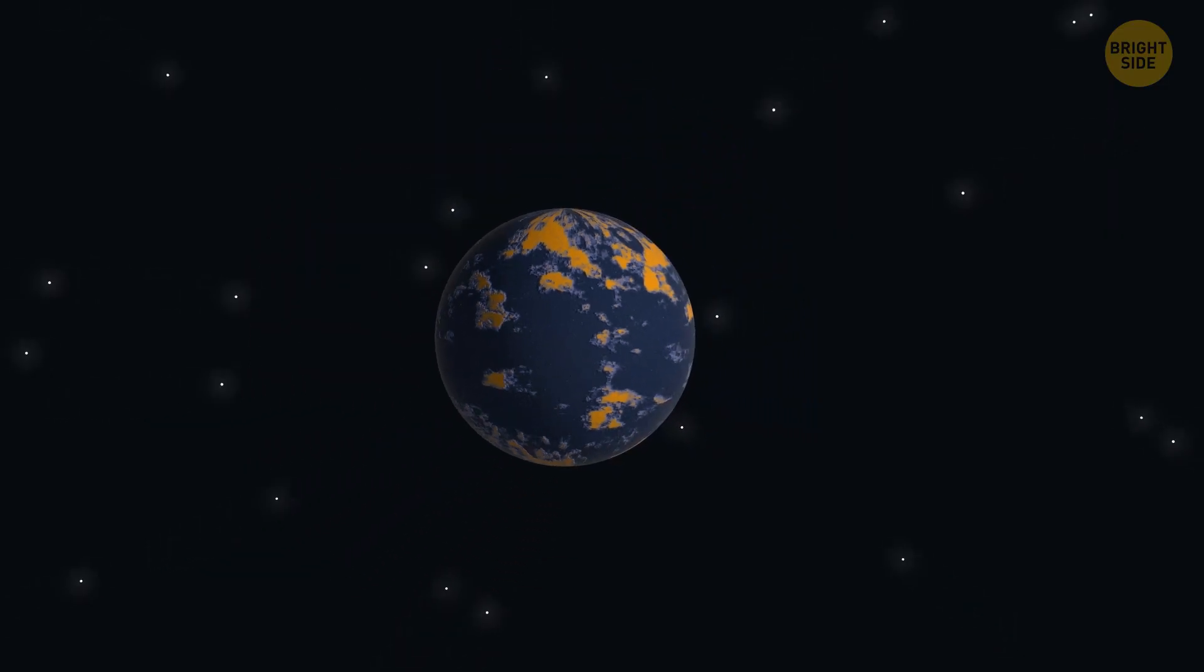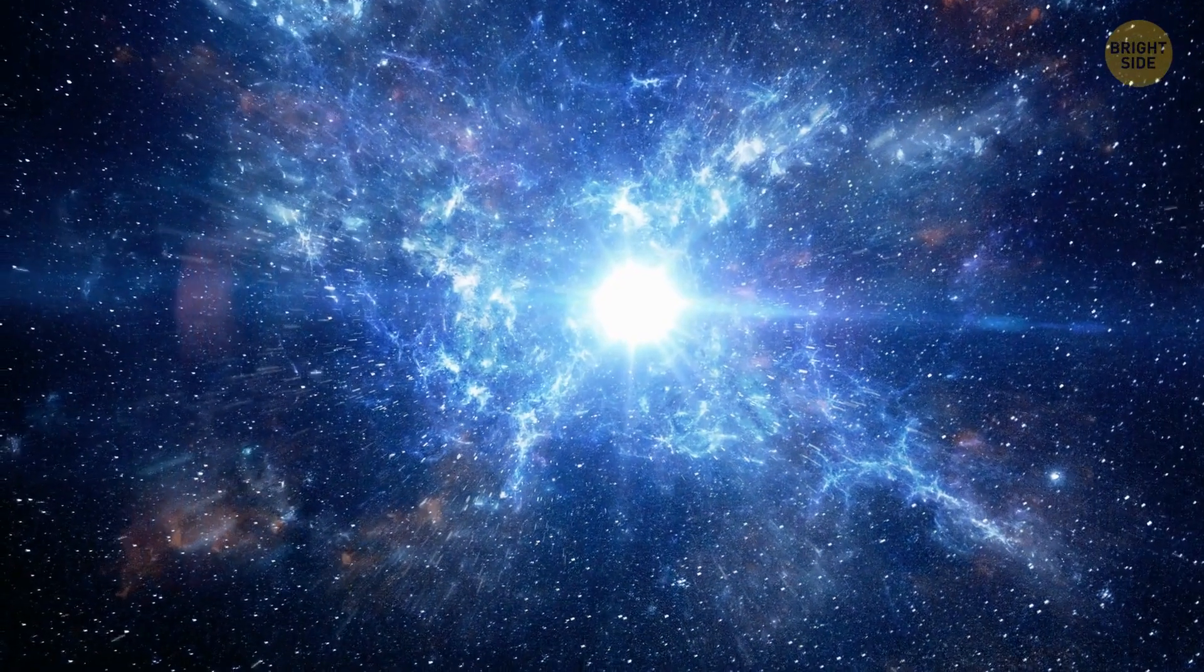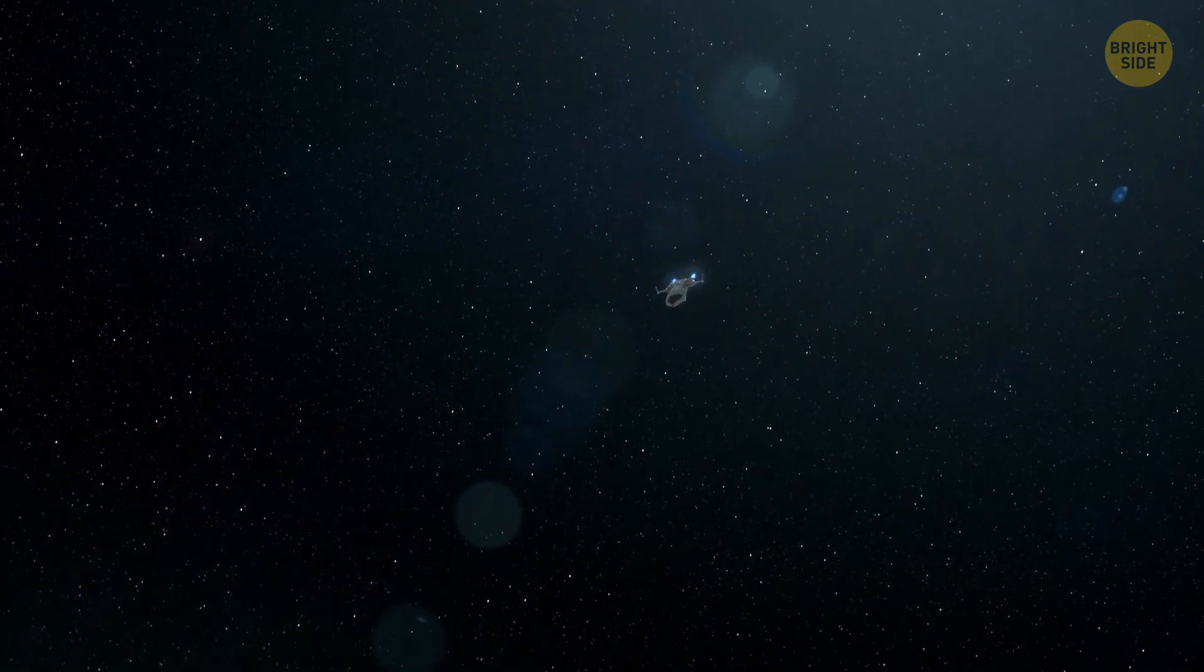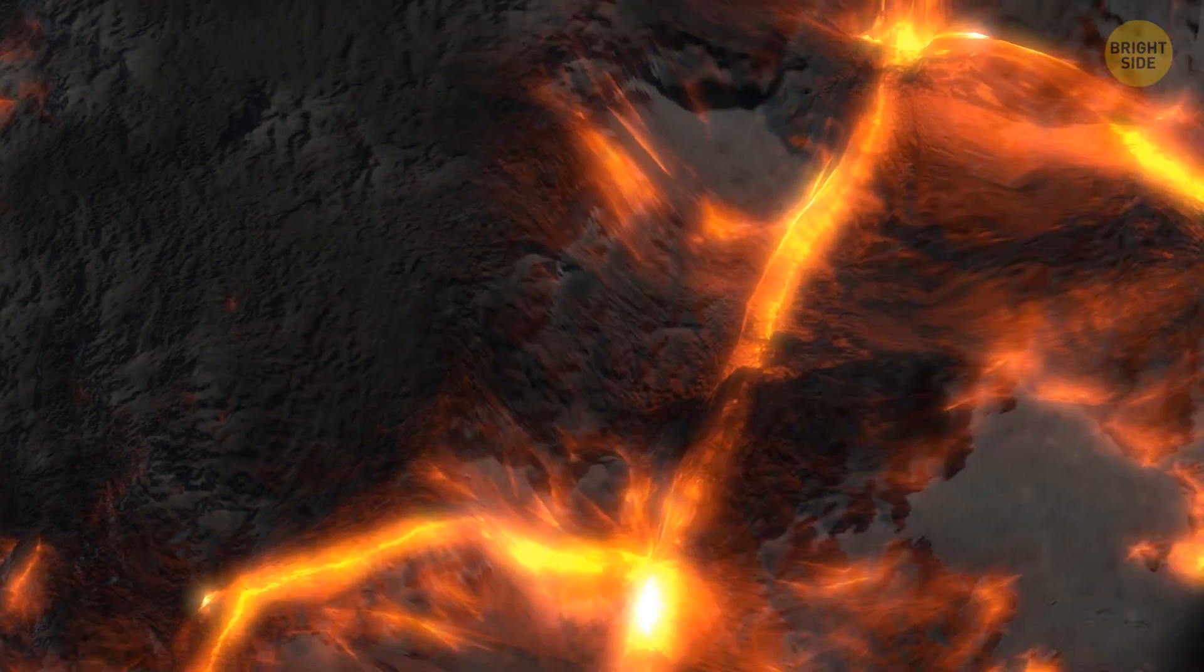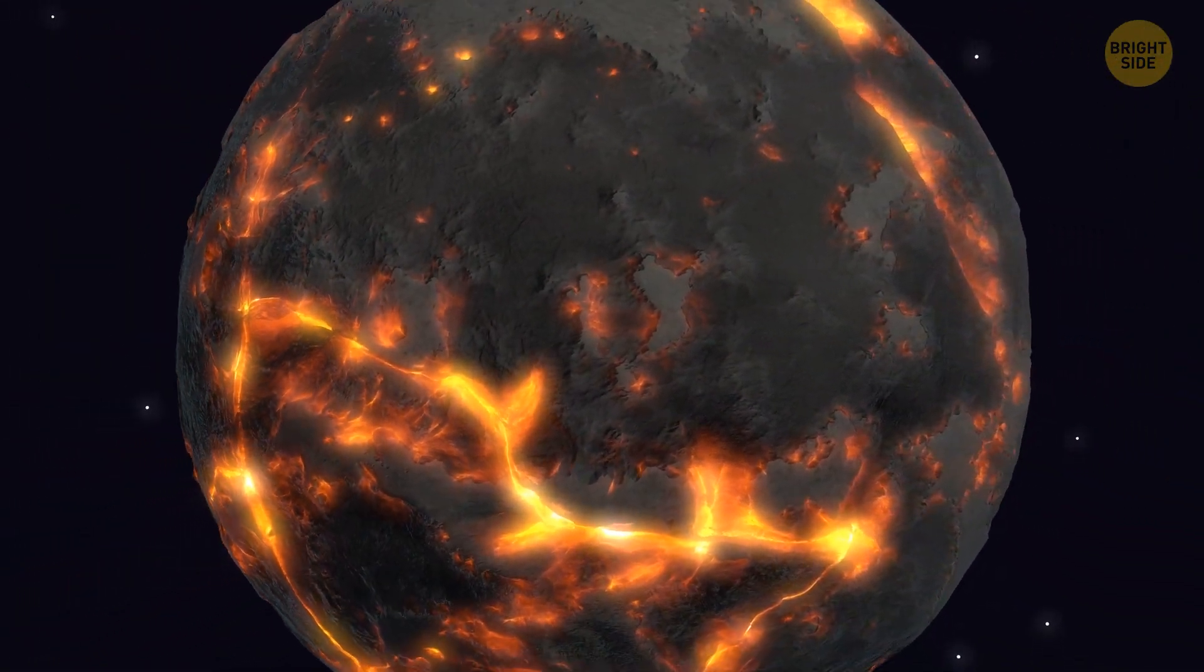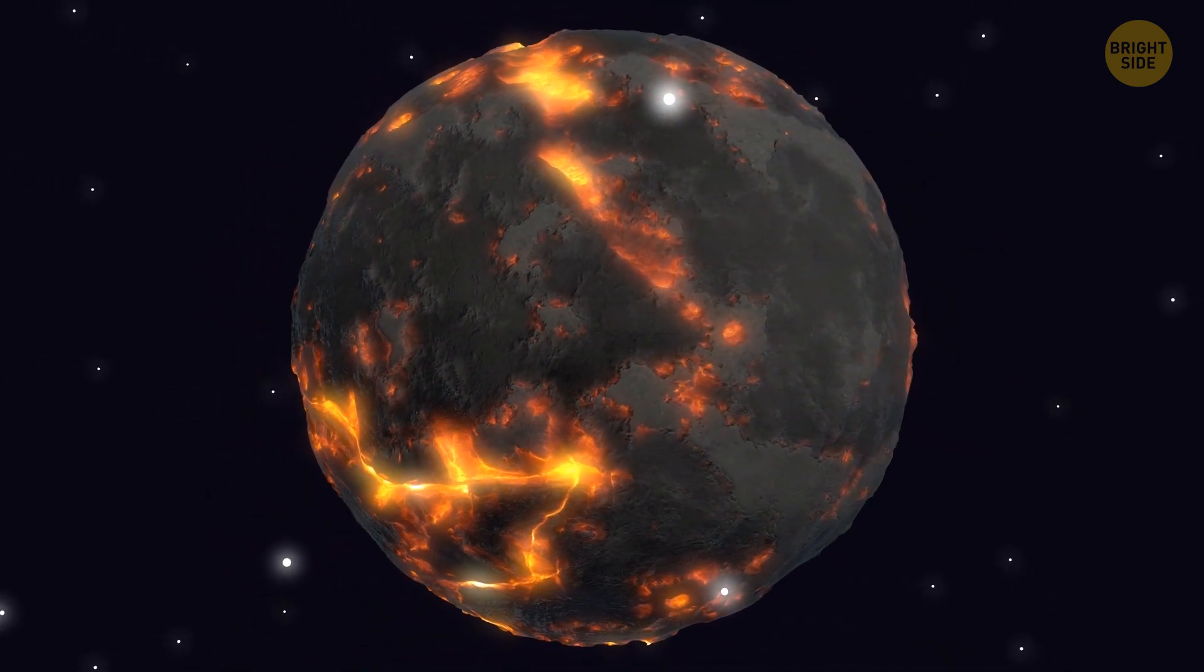That's why, by studying why Venus went down a different path in terms of habitability, we can unlock the secrets of what makes other worlds just right for life. However, there are still mysteries to solve. We need more missions to study Venus and understand its history better. For example, learn how quickly it cooled down after its formation. We also want to figure out if the transformation was a one-time cataclysm or a series of events over billions of years.